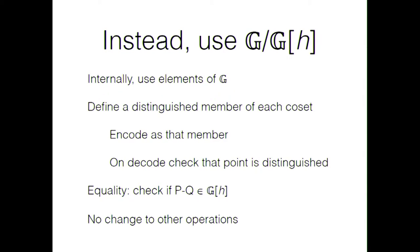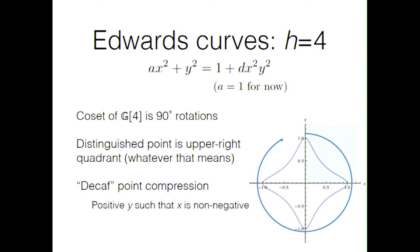When you want to write a point down to send to the other party, you want to write it down canonically so that each member of the quotient group G/G[h] has a unique encoding. The straightforward thing to do is to pick one of the elements of the coset — one possible representative — to be the distinguished or canonical one that you write out. When you decode a point, you then check that it was indeed the distinguished element. There are no changes to the other operations.